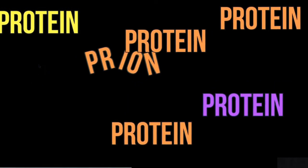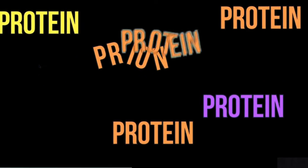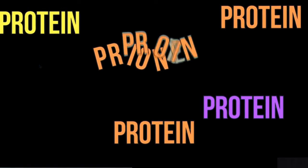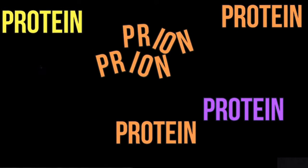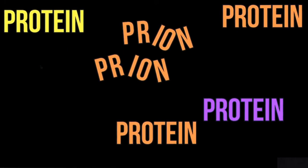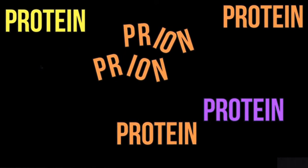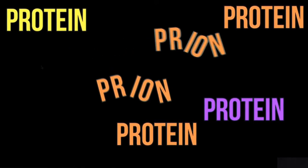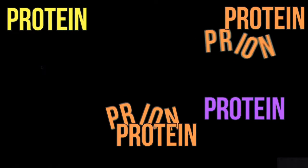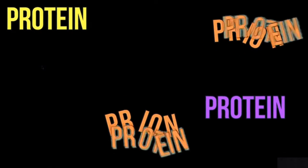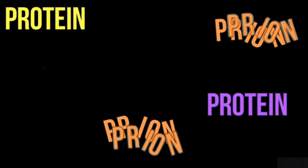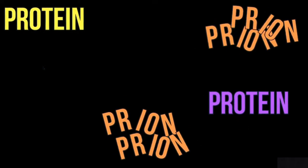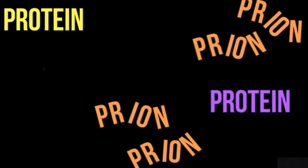Creutzfeldt-Jakob disease is a prion disease. A prion is a misfolded protein. When a prion comes into contact with a regular protein, it also becomes misfolded. There is no DNA, no microbe — just protein.